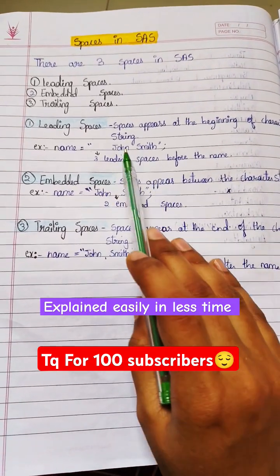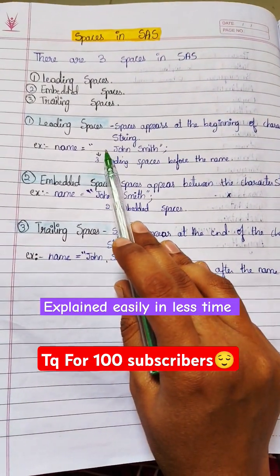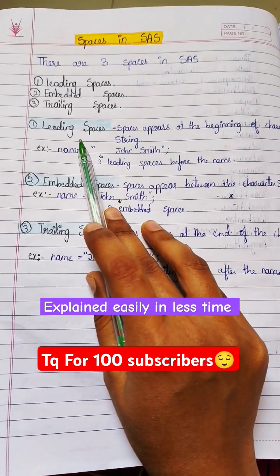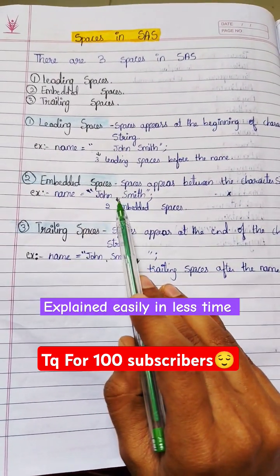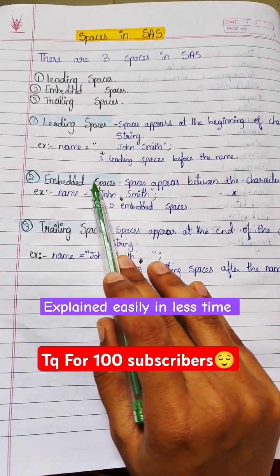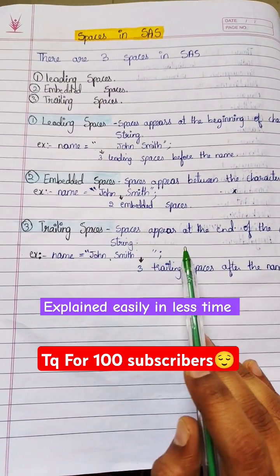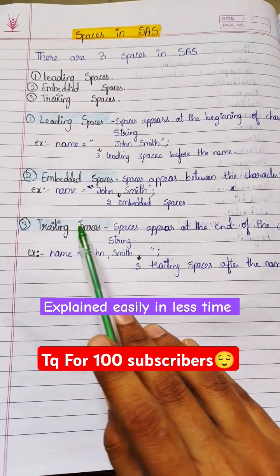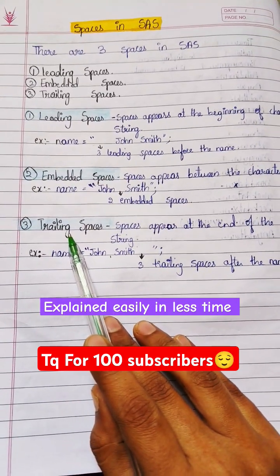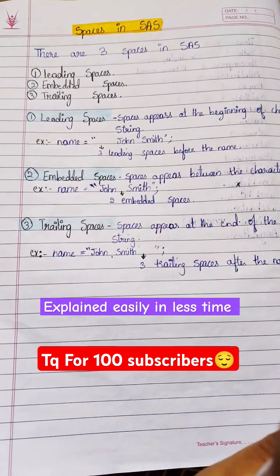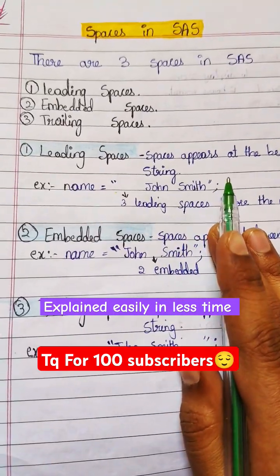So, when there are spaces at the beginning, it is nothing but leading spaces. When there is a space between the value, that is nothing but embedded spaces. When there is a space at the end, those spaces are nothing but trailing spaces. So we have only three types of spaces. Thanks for watching.